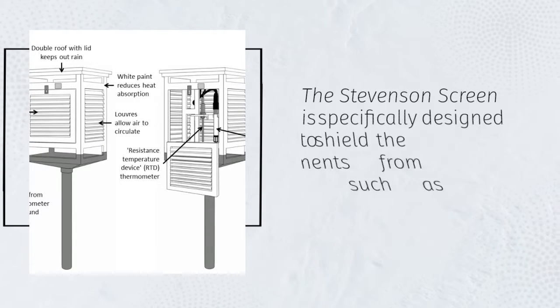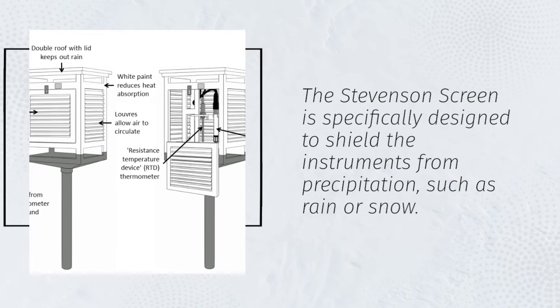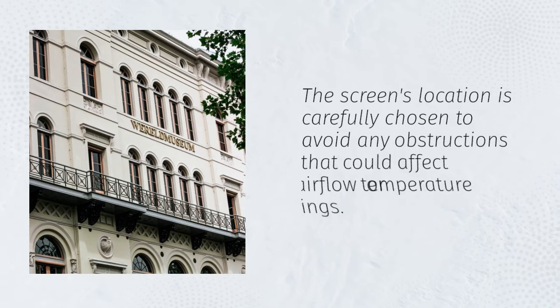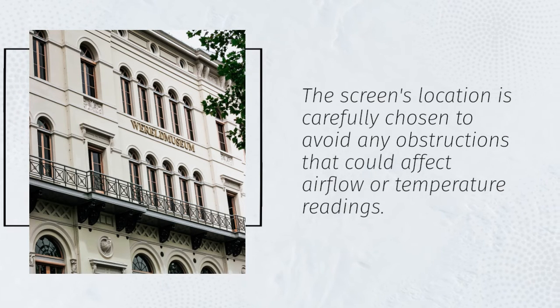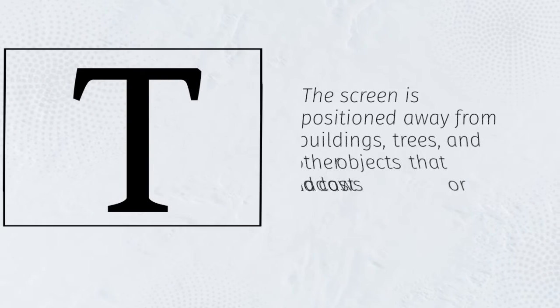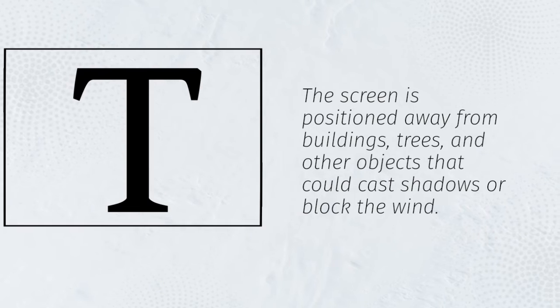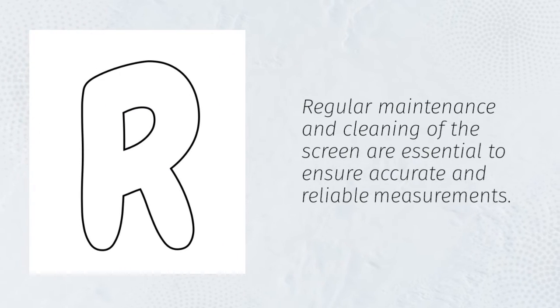The Stevenson screen is specifically designed to shield the instruments from precipitation such as rain or snow. The screen's location is carefully chosen to avoid any obstructions that could affect airflow or temperature readings. The screen is positioned away from buildings, trees, and other objects that could cast shadows or block the wind.